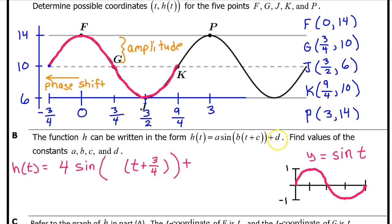The d value is the vertical translation compared to the parent function. Notice that the midline of the parent function is at zero. The fact that the midline of h of t is at 10 means that there is a vertical translation by 10 compared to the parent function. So that is the value of d.